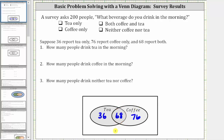Now let's determine the number of people that drink neither coffee nor tea — the people not in the tea set and not in the coffee set. The sum of the values in the diagram is 36 plus 68 plus 76, which equals 180. Since there were 200 people surveyed, 200 minus 180 equals 20. There must be 20 people outside these two sets that drink neither coffee nor tea.